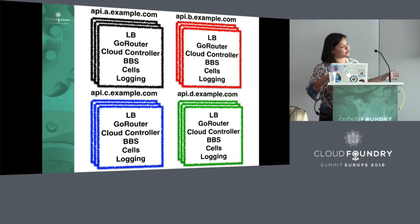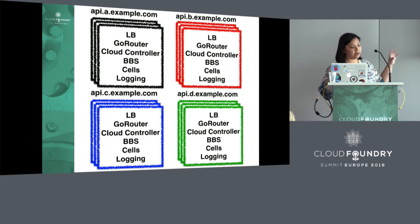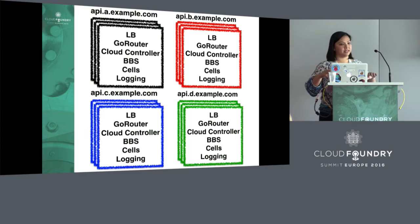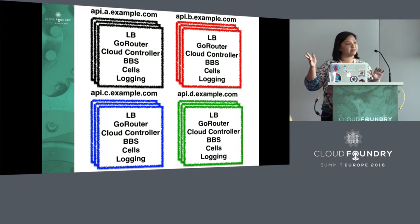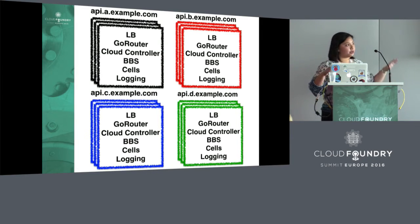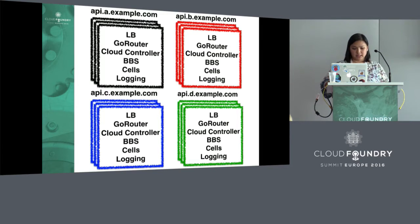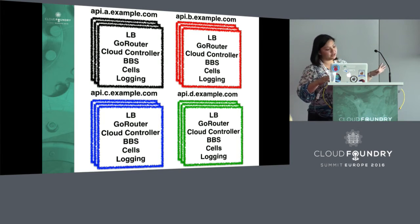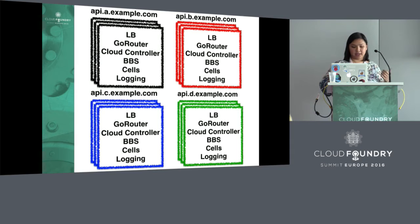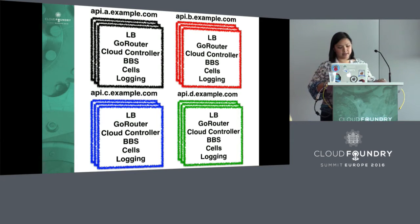You've got four Cloud Foundries pictured here. Developers have to target four different endpoints and hopefully push their app to the correct one. Your admins may have difficulty keeping the permissions correct — given an org and a space, should that user have the same permissions across all of them, or does it vary? The operator management also has to think about patch levels; you might end up not patching one of them for a really long time. So let's assume that for these deployments, an isolation segment might help reduce this overhead.